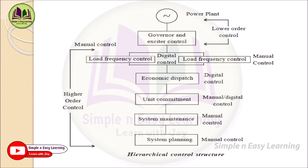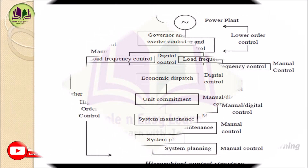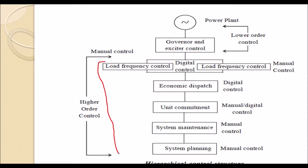Unit commitment involves deciding which units to commit (keep on standby). Out of 6 units, if only 3 are needed, the remaining 3 are committed. A unit that is not economical to run for the required 300 megawatts is called a committed unit — handled by manual or digital control. System maintenance is done entirely by manual control through crew members. System planning — planning for the future development of the power system — is also manual control.